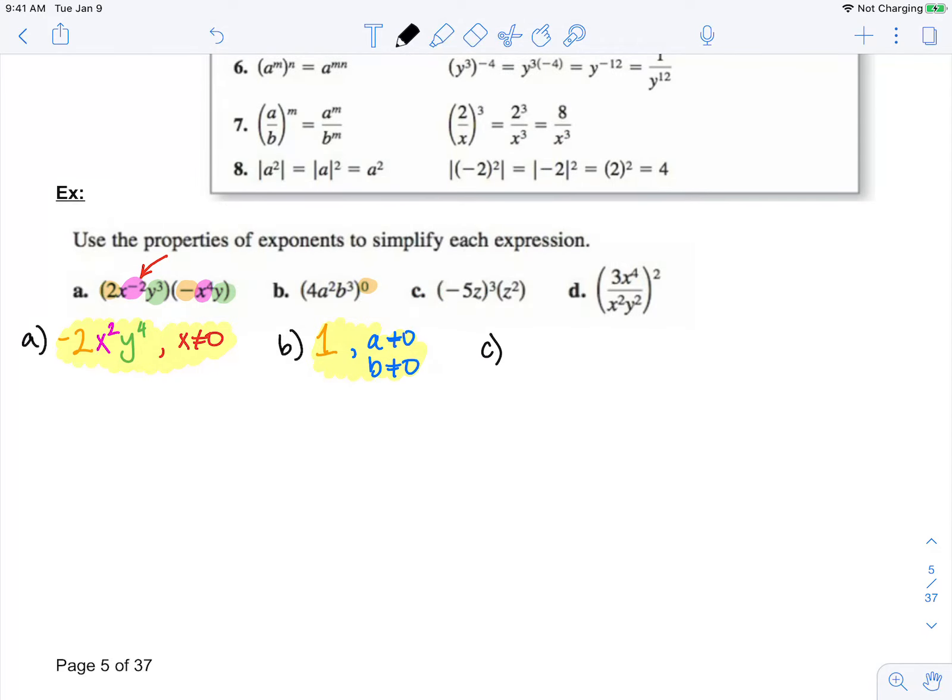Now let's look at c. So the first thing I see in c is this 3rd power. So now I'll have negative 5 to the 3rd times z to the 3rd, and I'll still have z squared.